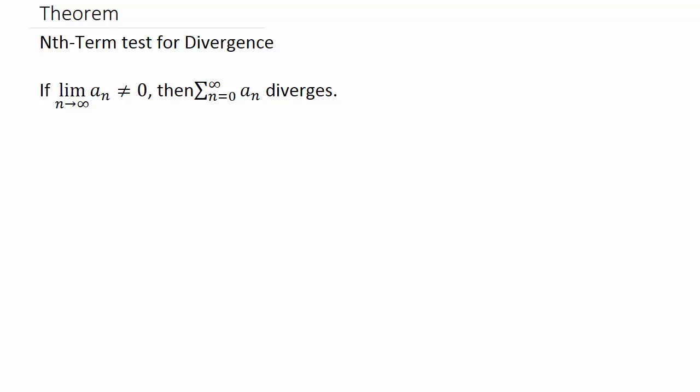Alright, so in this video we're going to talk about the nth term test for divergence. It says if the limit of a sub n, as n goes to infinity, does not equal 0, then the series diverges.